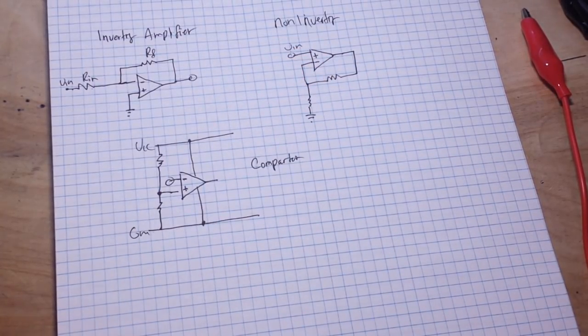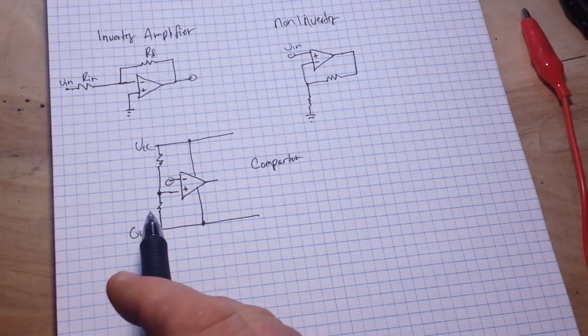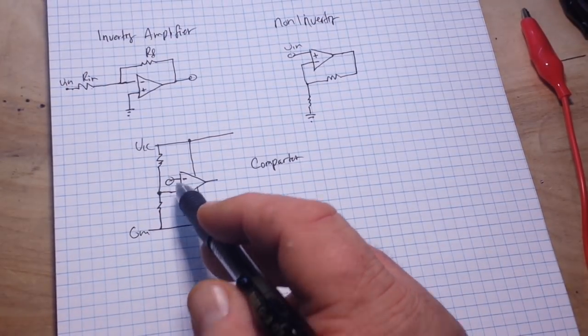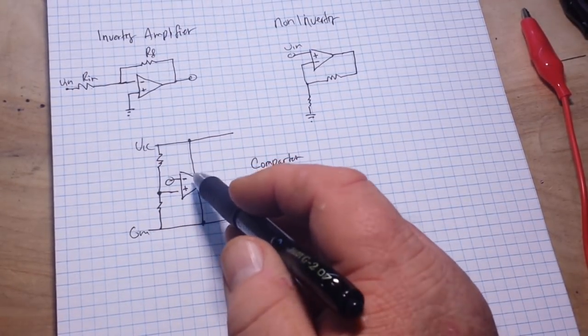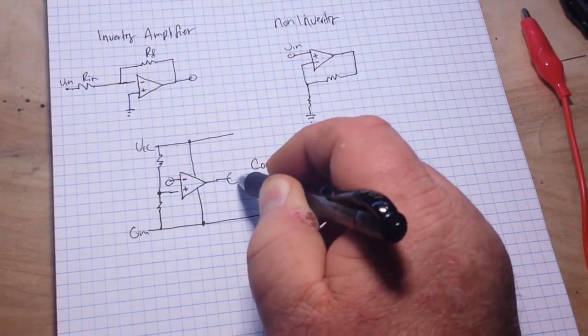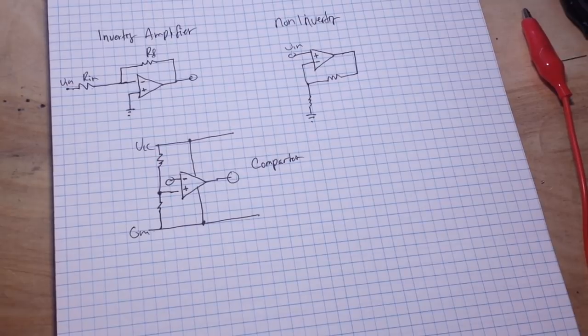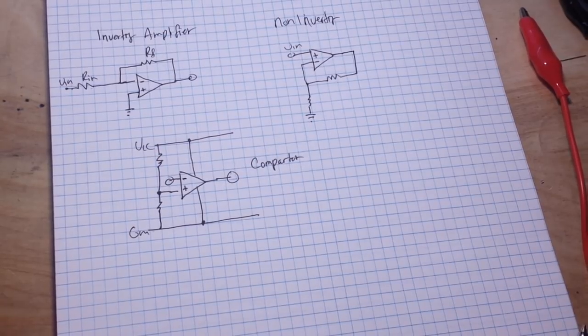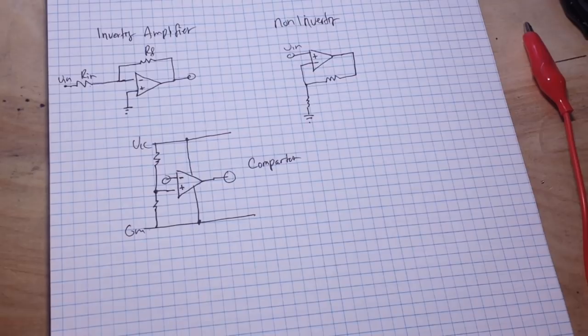And then the inverting input is where we'll connect our VN. And if the VN is higher or lower than the inverting input, then the comparator will switch on. So that's the main configurations of the op-amp.